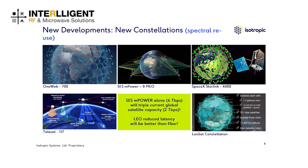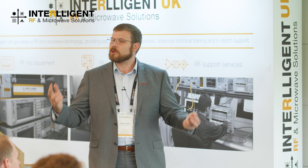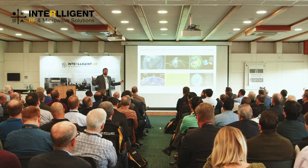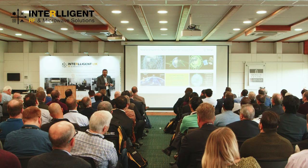With increases in launch capacity, decreased cost, and the ability to reuse spectrum more efficiently, those combine to give us LEO constellations. Every week someone else is talking about launching another several hundred or thousand satellites to provide commercial service or Earth observation. The big ones getting news: OneWeb, SES O3b, Starlink from SpaceX, Telesat, LeoSat, and Amazon — and more than I can count.